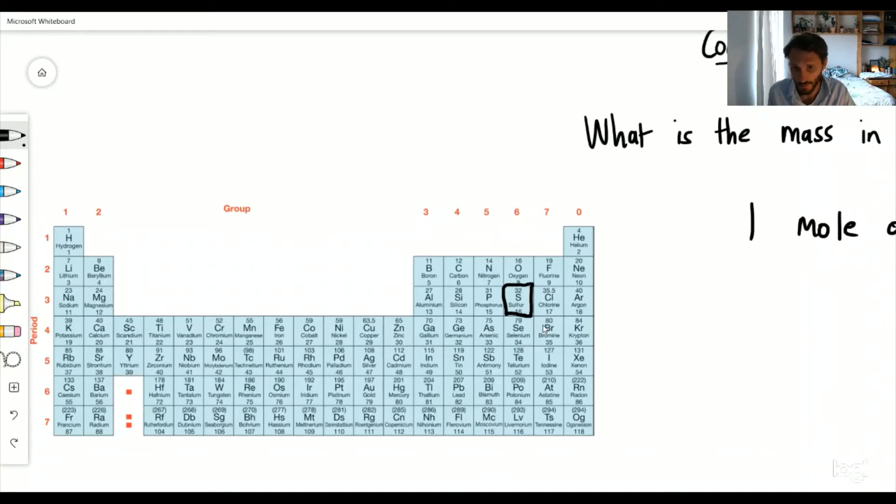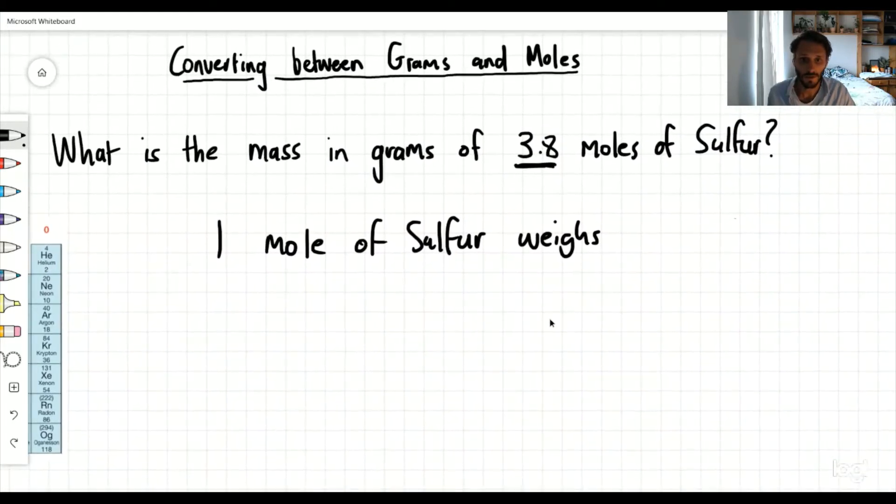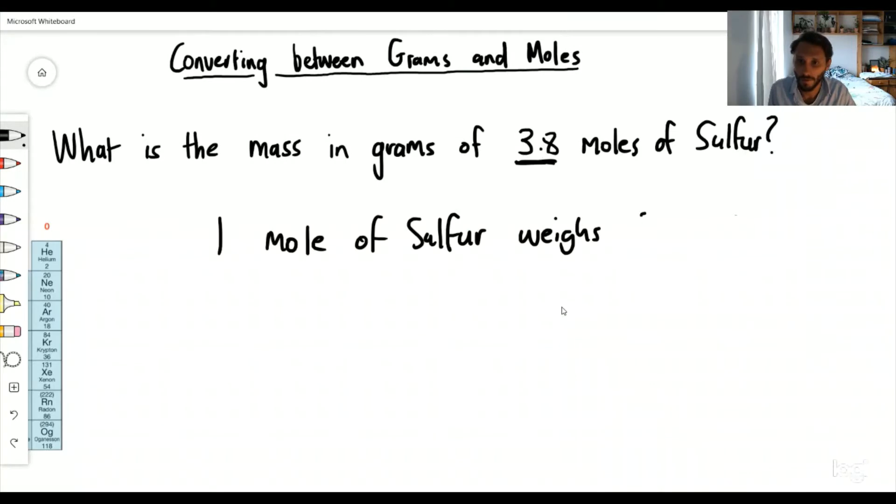The bigger number on the top is the mass. So one mole of sulfur weighs 32 grams. We can write here one mole of sulfur weighs 32 grams. I can then summarize this: one mole is 32 grams.